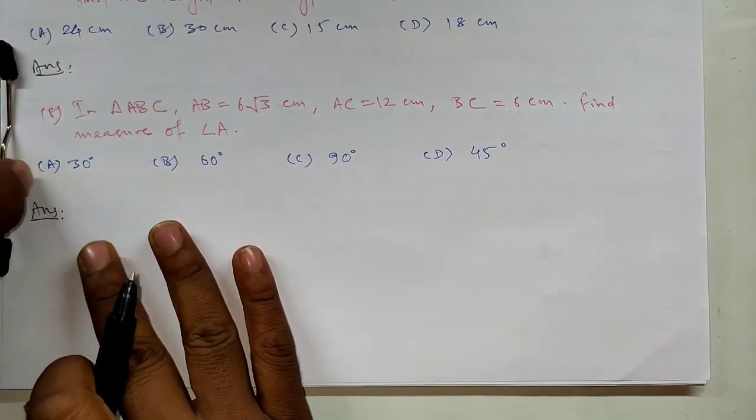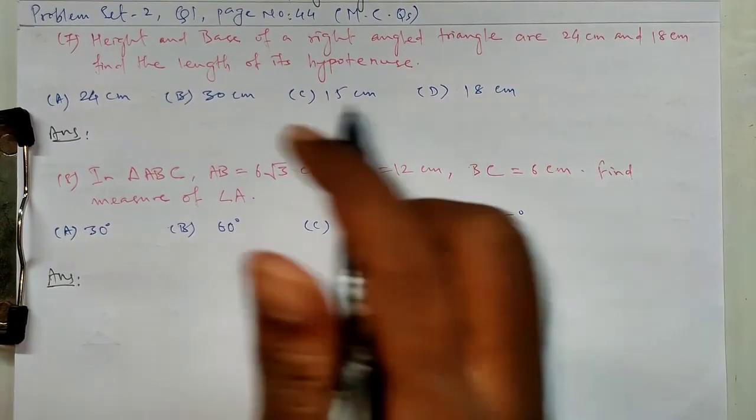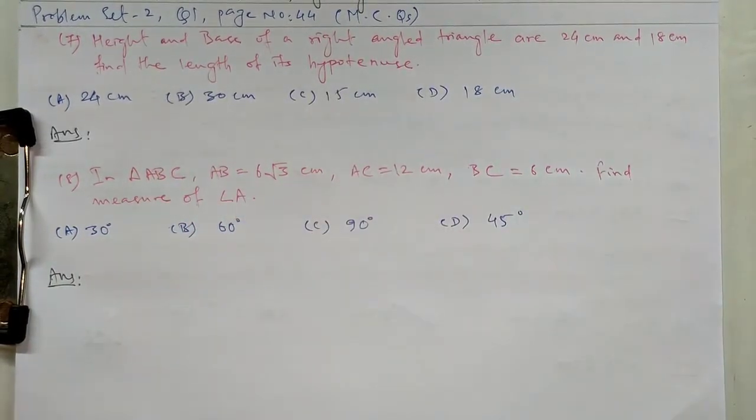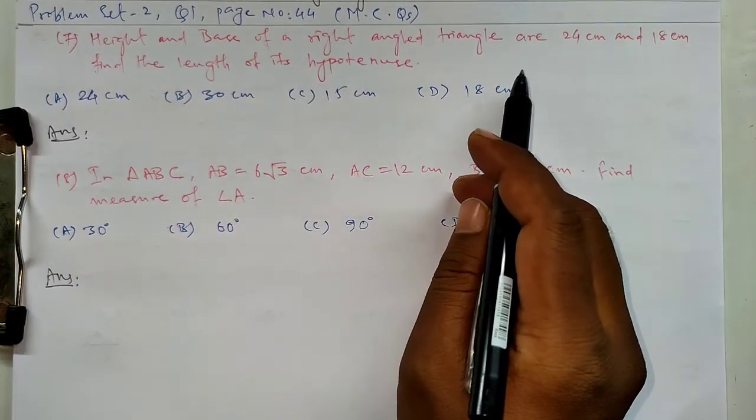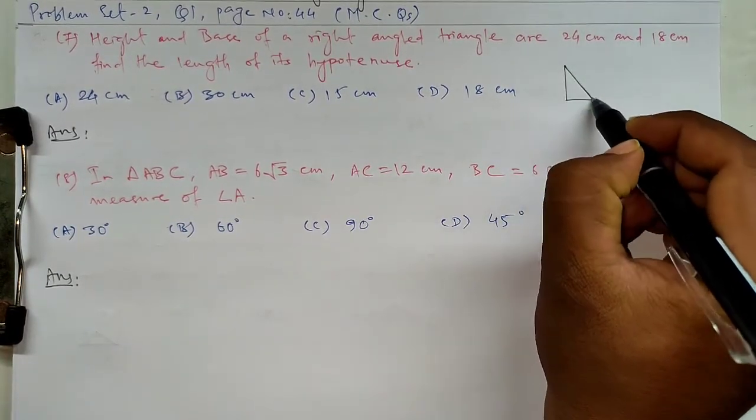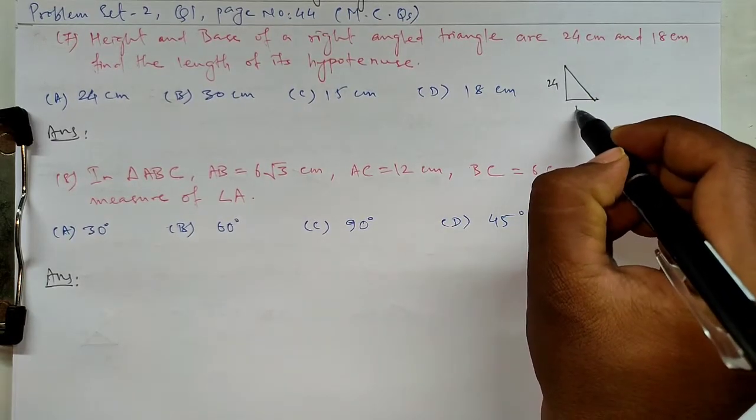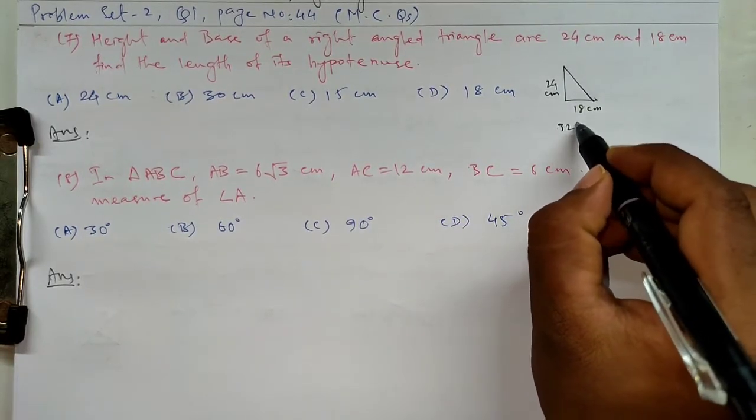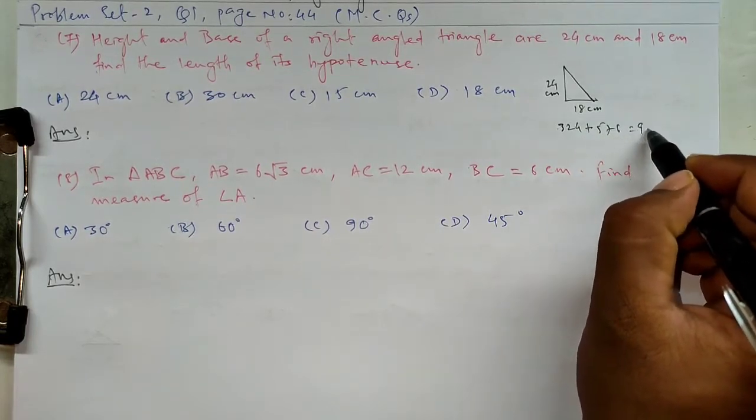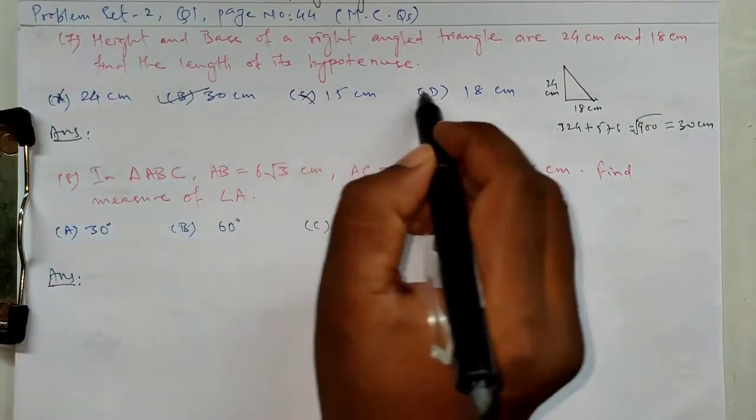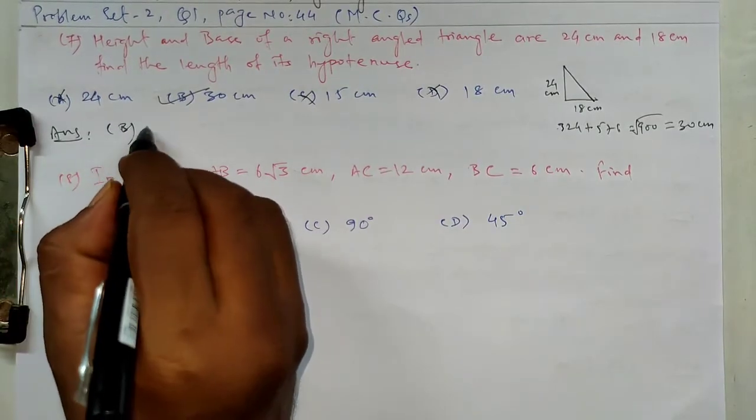Question number 7. Height and base of a right angle triangle are 24 cm and 18 cm. Find the length of its hypotenuse. 24 square is 576 and 18 square is 324. Adding, 576 plus 324 is 900. Square root is 30. Option B is 30 cm.